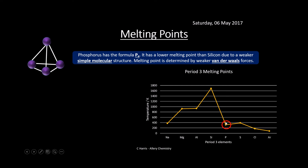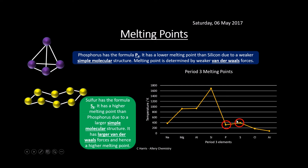Next is phosphorus, with formula P4. It has a much lower melting point compared to silicon — it's not macromolecular. This is called simple molecular — very small molecules. The melting point is determined by van der Waals forces, which are a lot weaker than the many strong covalent bonds in silicon. Sulfur is S8, in an octagon shape, and it rises marginally above phosphorus because it's a slightly bigger molecule with larger van der Waals forces, and therefore a higher melting point.